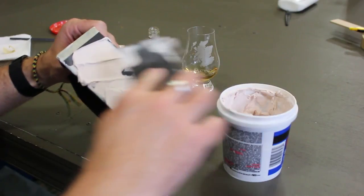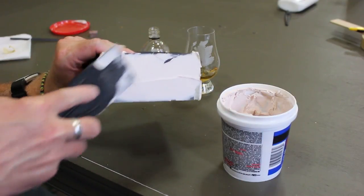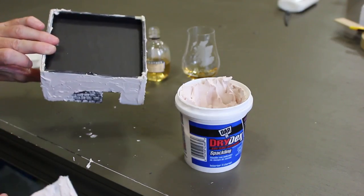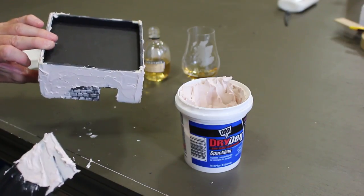You can just slop this spackling on in any type of random way that you wish. And there you have it, spackling done. A little bit of brickwork is exposed.